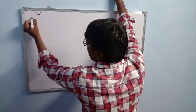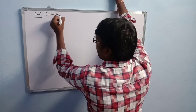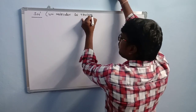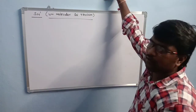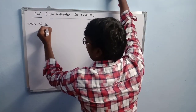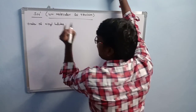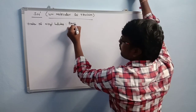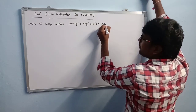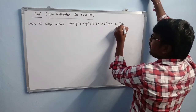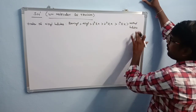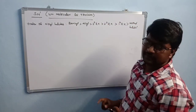In SN1 reactions, the order of reactivity of alkyl halides is: benzyl halides > allyl halides > tertiary alkyl halide > secondary > primary > methyl halide. This order is based on the stability of the carbocation formed — whichever alkyl halide forms a more stable carbocation is more reactive in SN1 reactions.